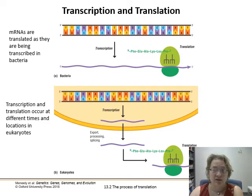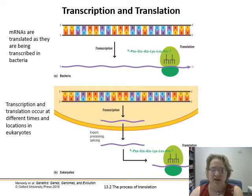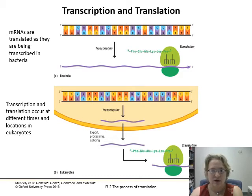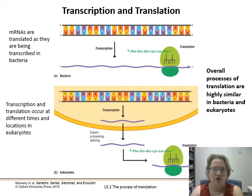Whereas in eukaryotes, there's a movement — the mRNA has to exit the nuclear membrane through one of the nuclear pores. It can only do that after it's been spliced and has a cap and tail added. So there's this idea of a mature RNA before it leaves the nucleus. After it exits, it can be snagged by a ribosome, either free floating or attached to the endoplasmic reticulum in order to be translated. But overall, translation is very similar in bacteria and eukaryotes, so we're not going to have to do a whole lot of compare or contrast. Same process.